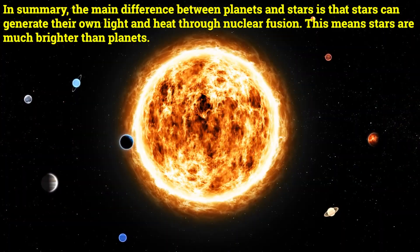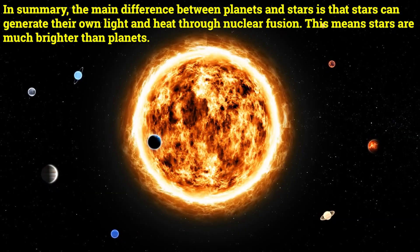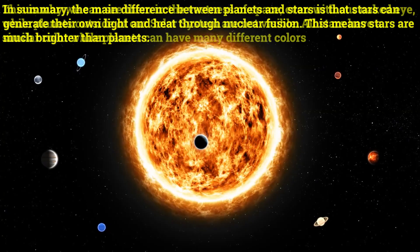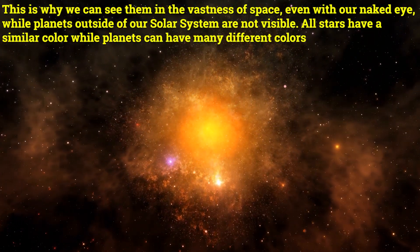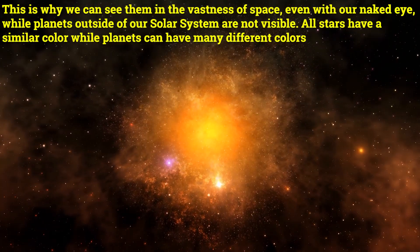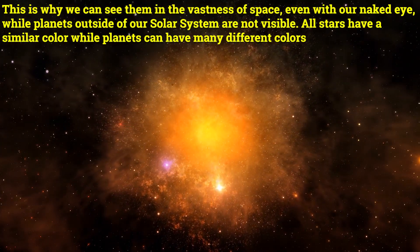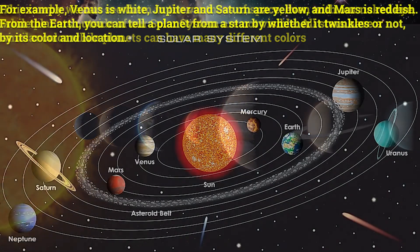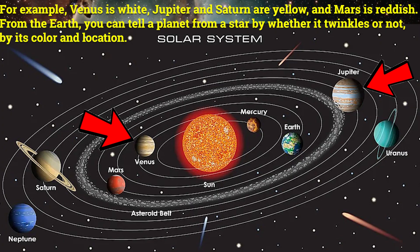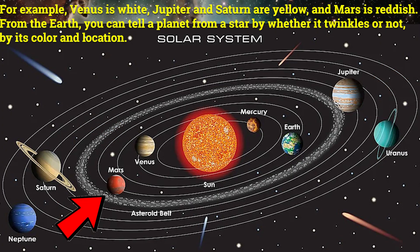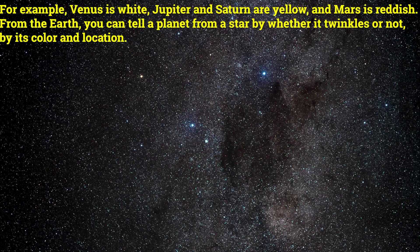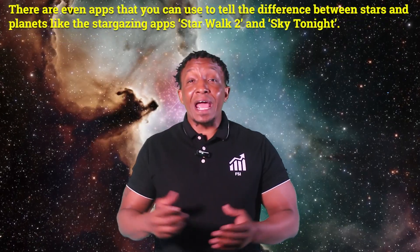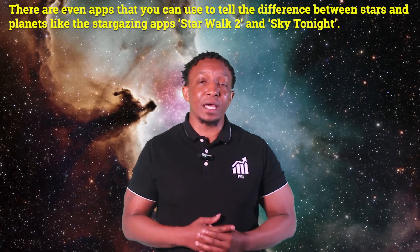In summary, the main difference between planets and stars is that stars can generate their own light and heat through nuclear fusion, making them much brighter than planets — which is why we can see them in the vastness of space with the naked eye, while planets outside our solar system are not visible. All stars have a similar color, while planets can have many different colors — for example, Venus is white, Jupiter and Saturn are yellow, and Mars is reddish. From Earth, you can tell a planet from a star by whether it twinkles or not, by its color, and by its location.